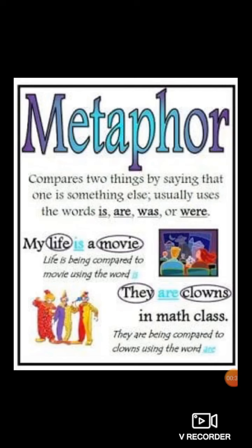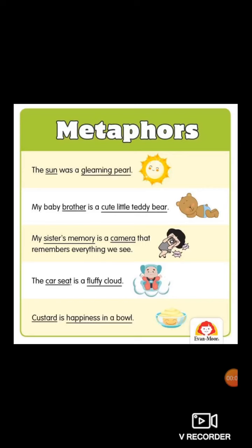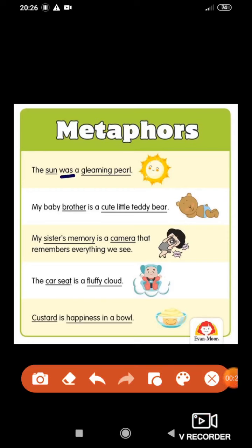Next metaphor example: 'There are clowns in maths class.' Here students are being compared to clowns using the word 'are.' Then: 'The sun was a gleaming pearl.' The sun and the gleaming pearl are two different objects; the indirect comparison is made using the word 'was.' This type of comparison using is, was, were, or are is known as metaphor.